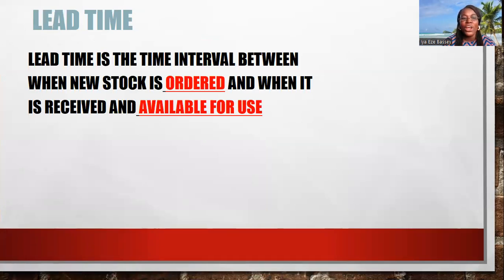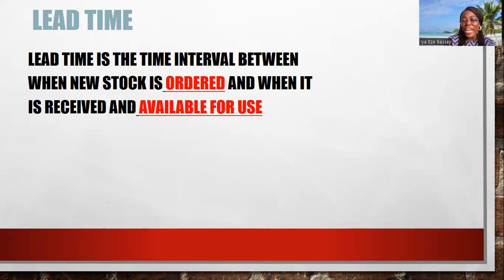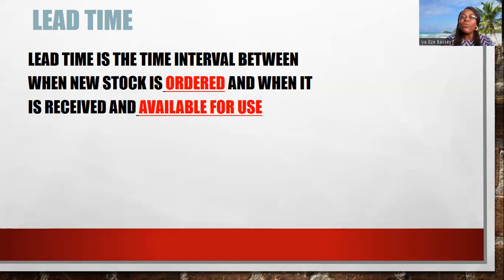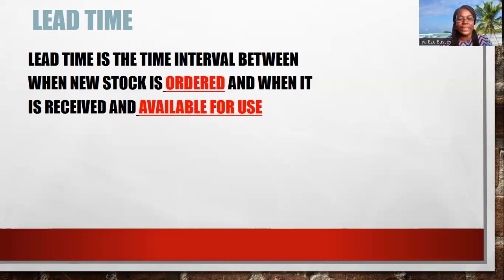Lead time is the time interval between when new stock is ordered and when it is received and available for use. Note: ordered and available for use are the key points. If reagents reach your lab in two weeks but you spend one more week sorting and shelving them, your lead time is three weeks — it is only once they are on the shelf and available for use that you can calculate the lead time.